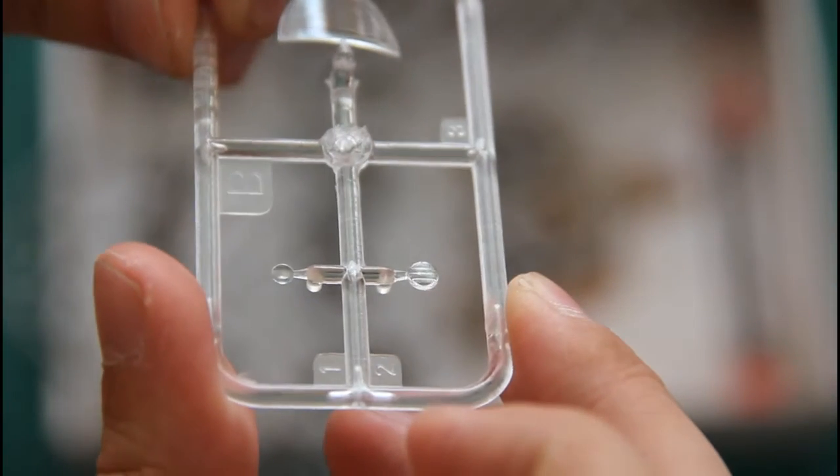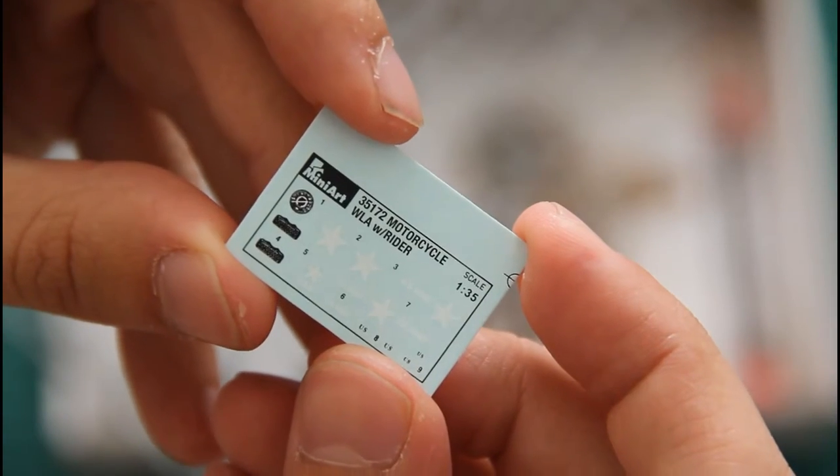Then we have one and only transparent sprue which contains the front windshield, then some transparent parts for the lights on the bike, a small decal sheet, and PE thread.